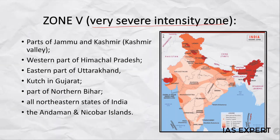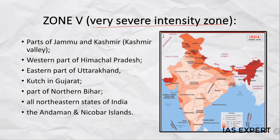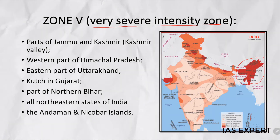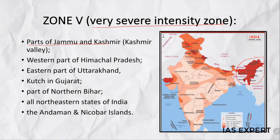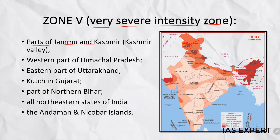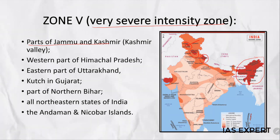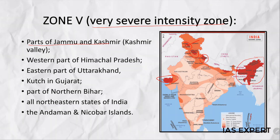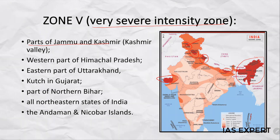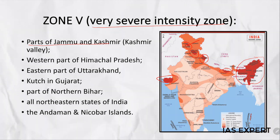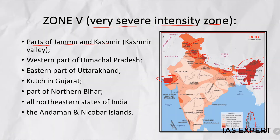Coming to Zone 5 — the very severe intensity zone. As you can see on the map, the red indicates Zone 5. This includes parts of Jammu and Kashmir, especially the Kashmir Valley; the western part of Himachal Pradesh; eastern part of Uttarakhand; Kutch in Gujarat; parts of northern and southern Bihar; the northeastern states of India; and the Andaman and Nicobar Islands.